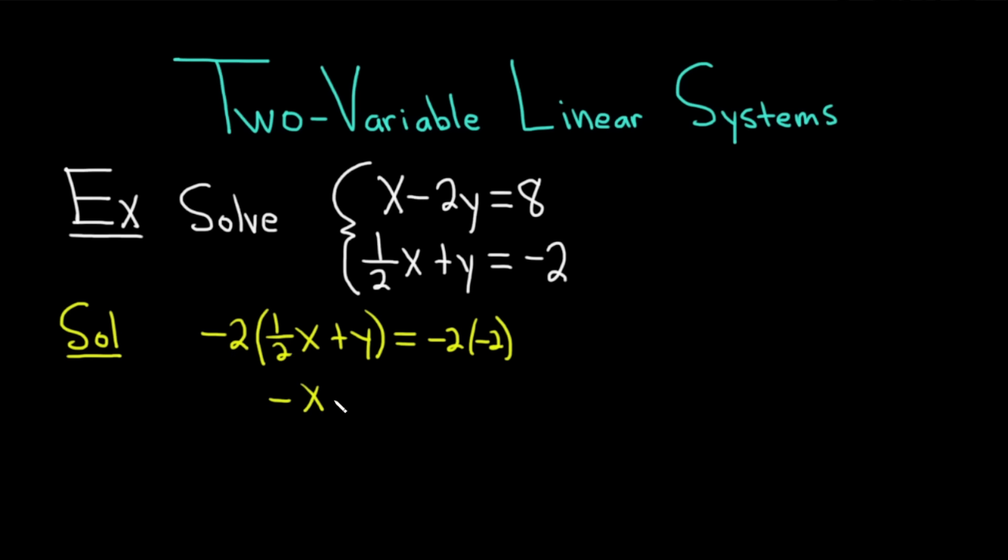Negative 2 times y is negative 2y. Then over here, we just get negative 2 times negative 2, so that's 4. I'm going to go ahead and write down the first equation right below this. So x minus 2y equals 8. Good stuff.